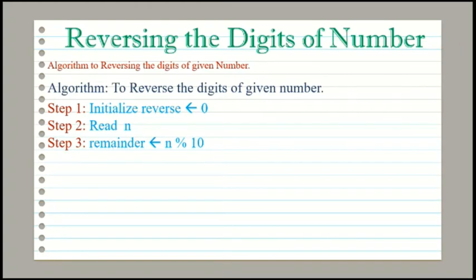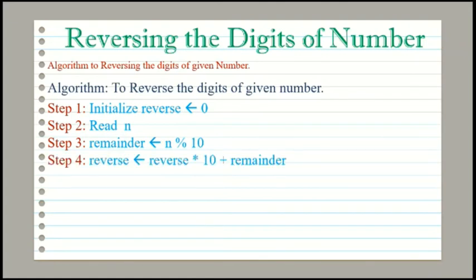The modulo operator gives you the remainder after dividing n by 10. So if n is 327, this statement divides 327 by 10 and the remainder 7 is saved in remainder. In step 4 we will calculate the reverse value, so the statement will be: reverse equal to reverse into 10 plus remainder. Here we first multiply the value of reverse by 10 and then add the value of remainder, and the result is saved in reverse.